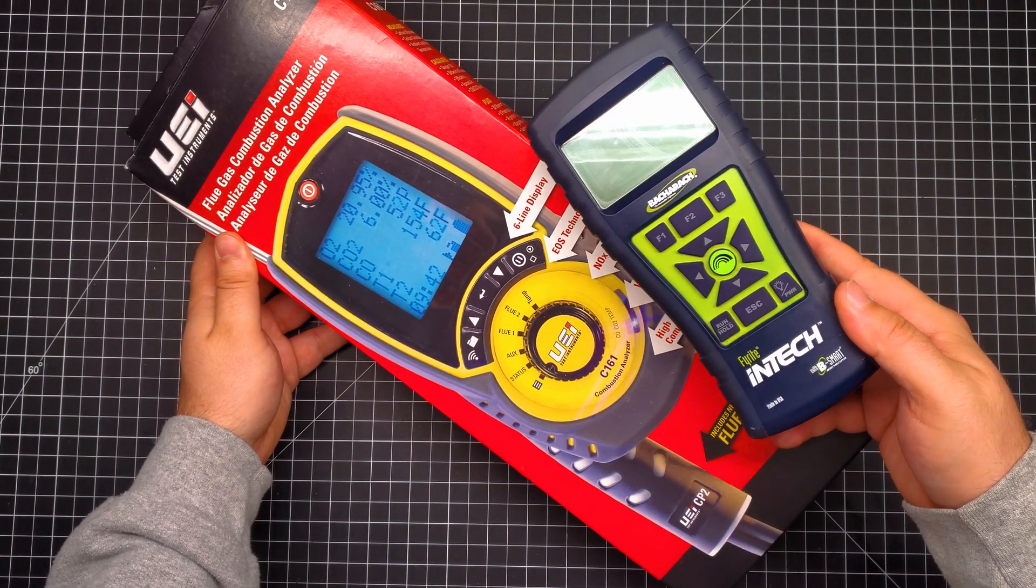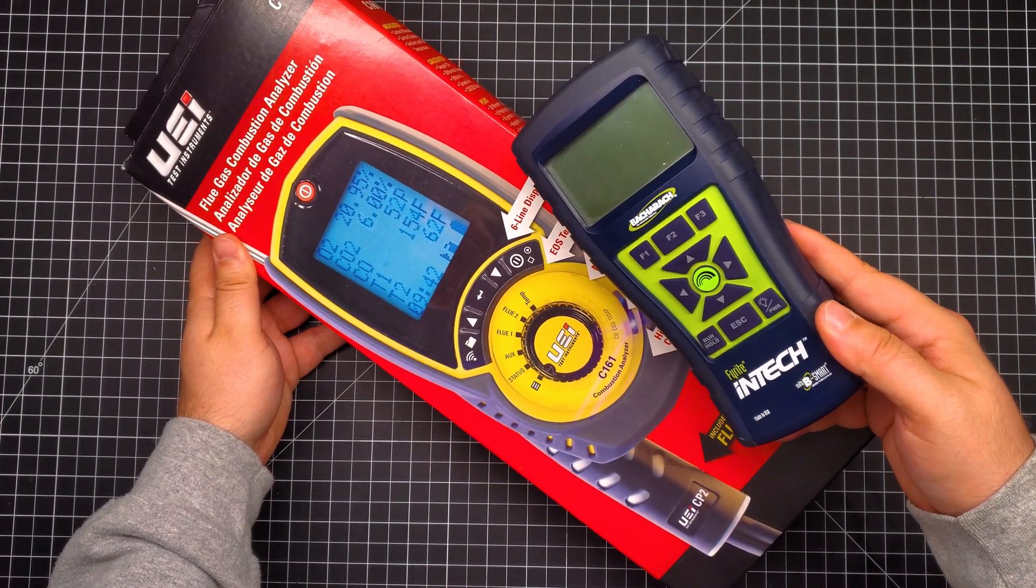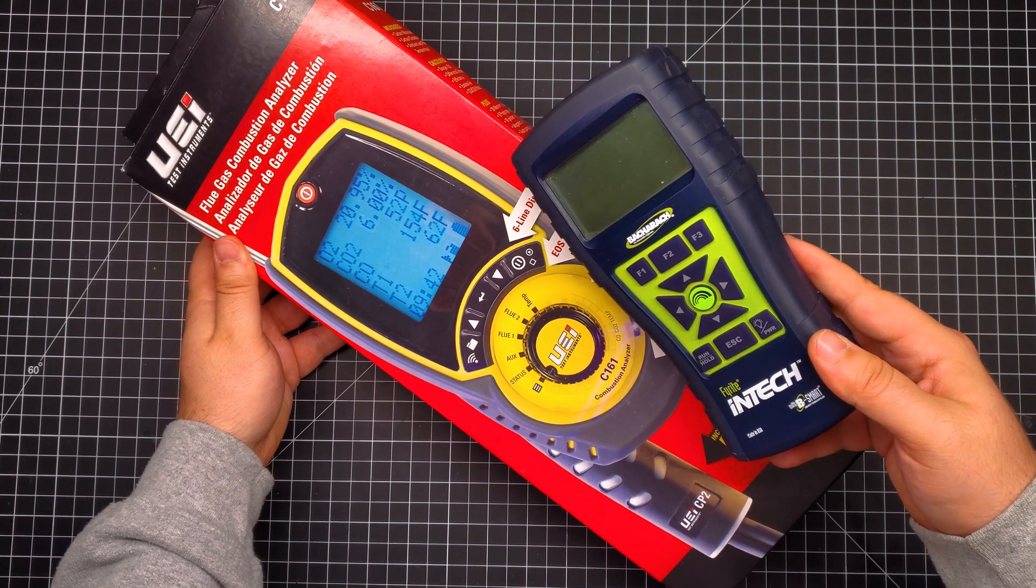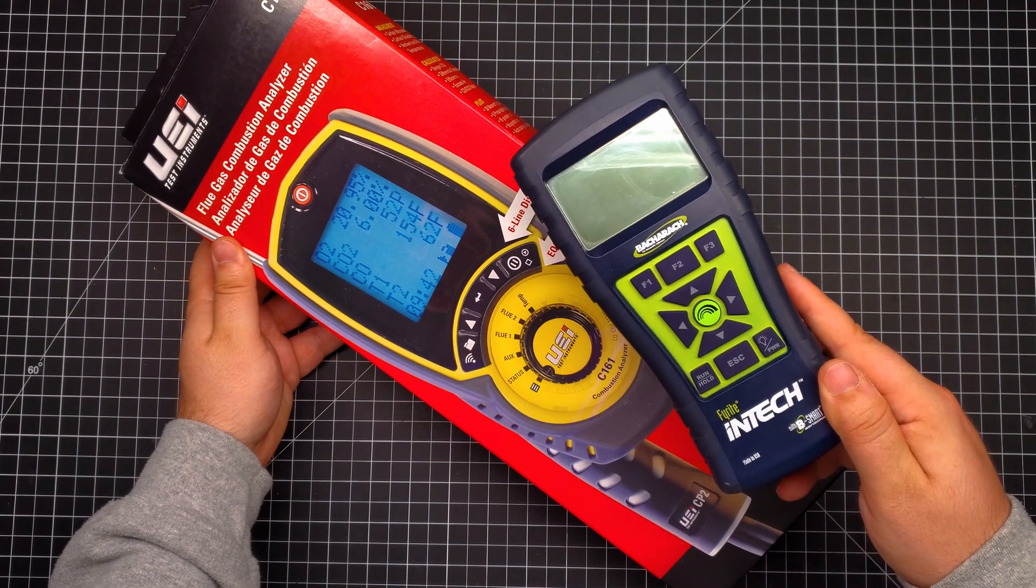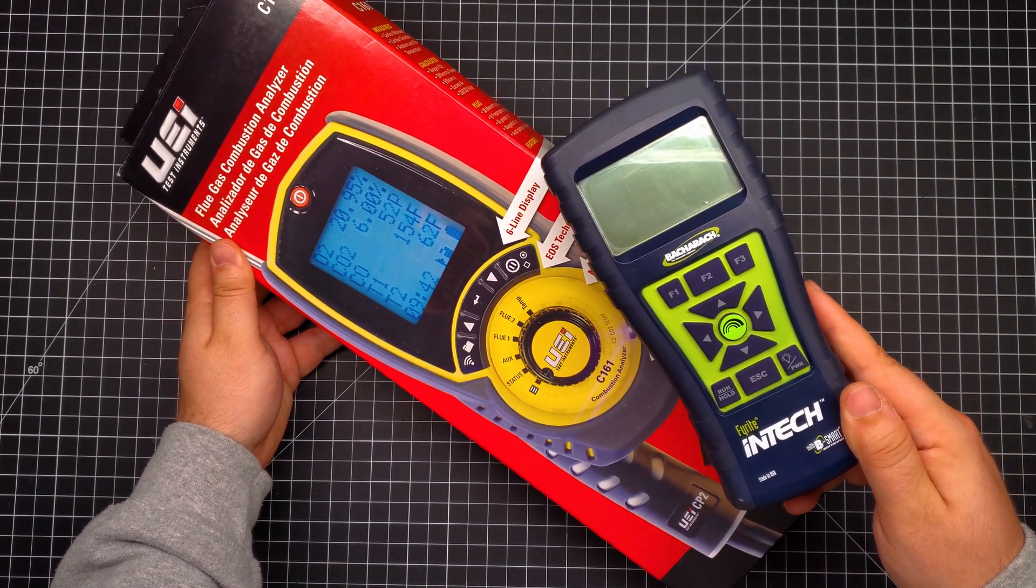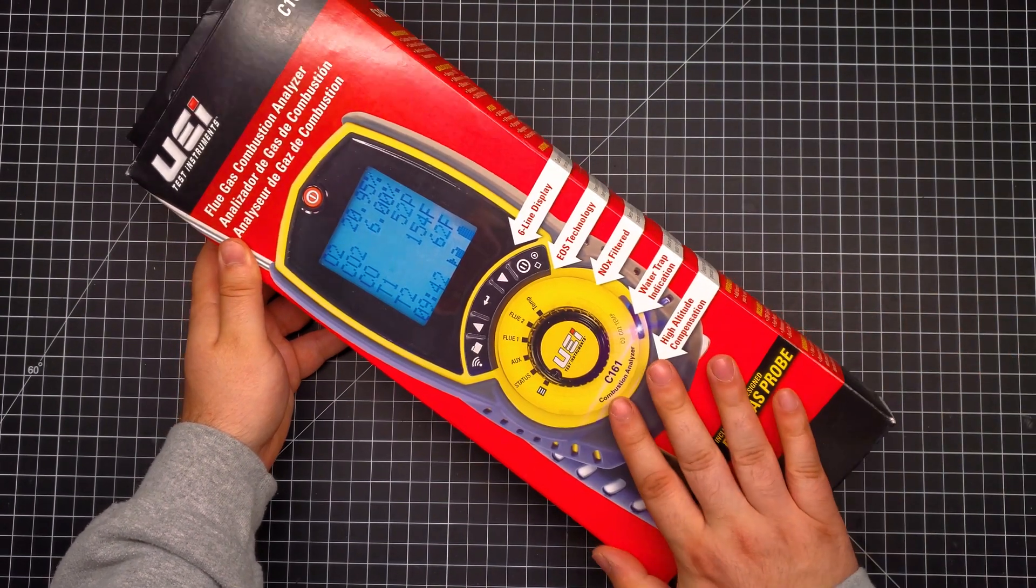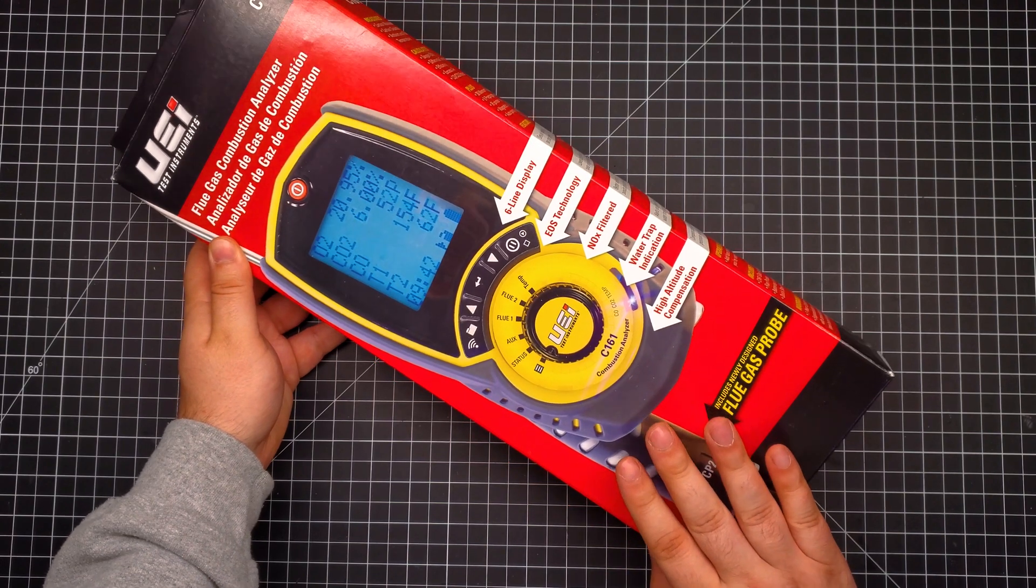Similar to this Bacharach analyzer that I have, this uses electrochemical sensors for both the O2 and CO sensors and that's something that almost all combustion analyzers on the market use, unlike this UEI and Kane Combustion Analyzer.